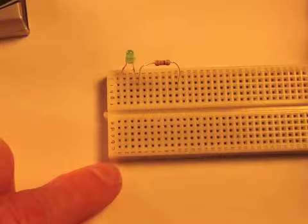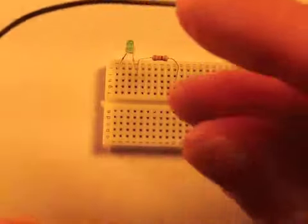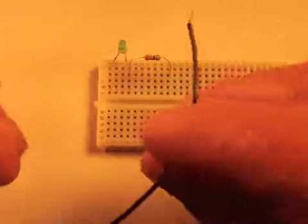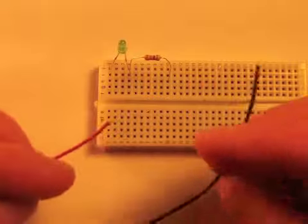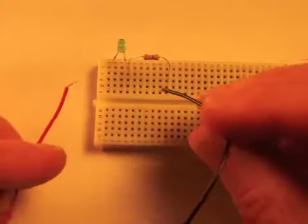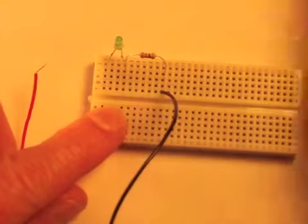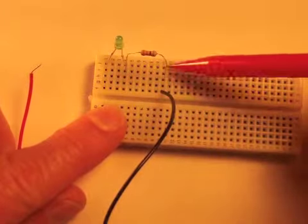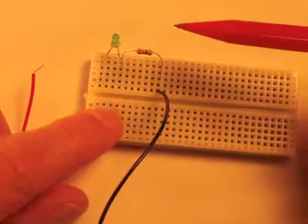And now it's time to add power. The black lead here on the battery is the negative end. So I'm going to put that over here and stick this in the same row as my resistor leg over here. And it just so happens to be row 10. It could have been any other row, but it happens to be 10.